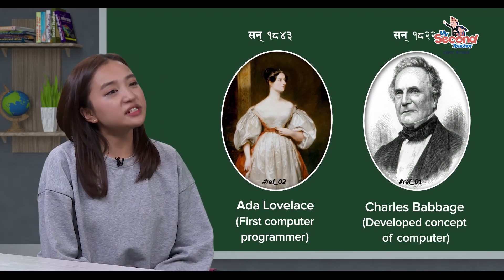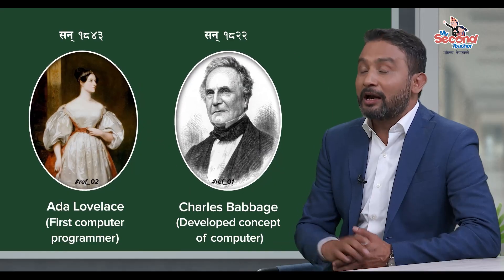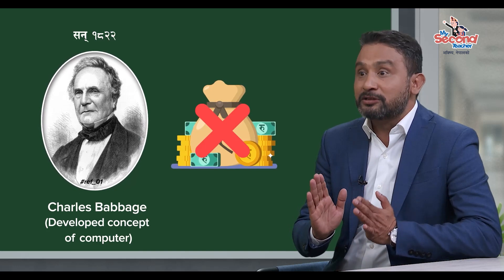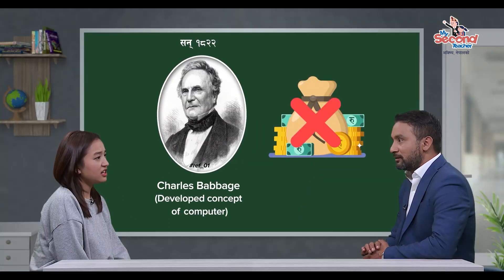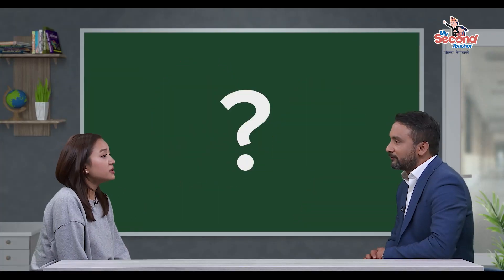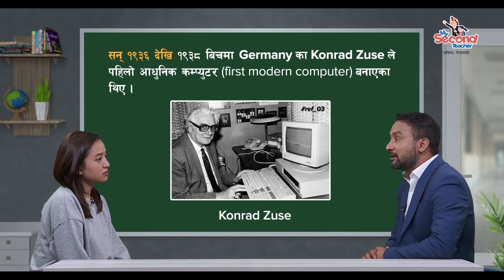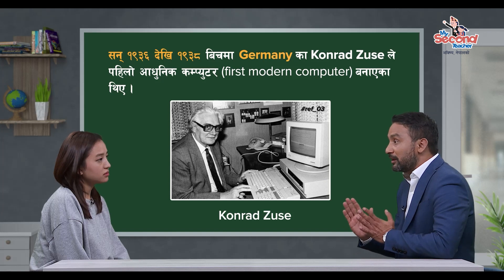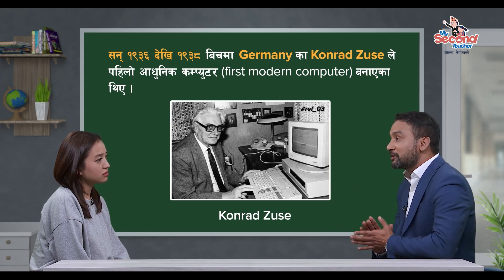In 1822, the first computer was being made. Charles Babbage was able to make a computer in 1822. In 1936 and 1938, and also in 1931, Germany made Konrad Zuse's first modern computer.